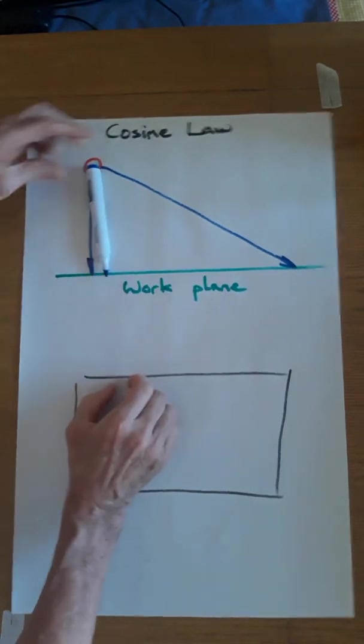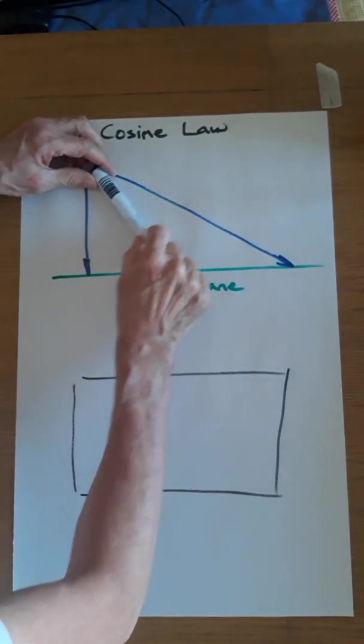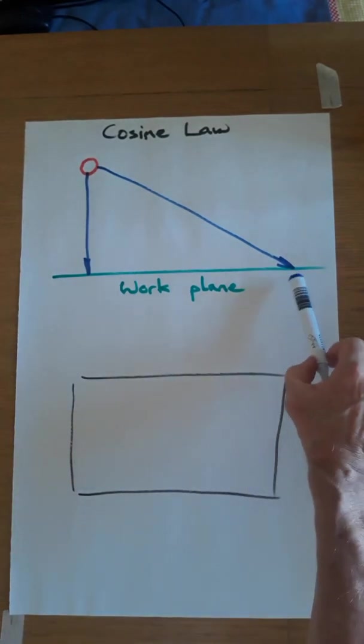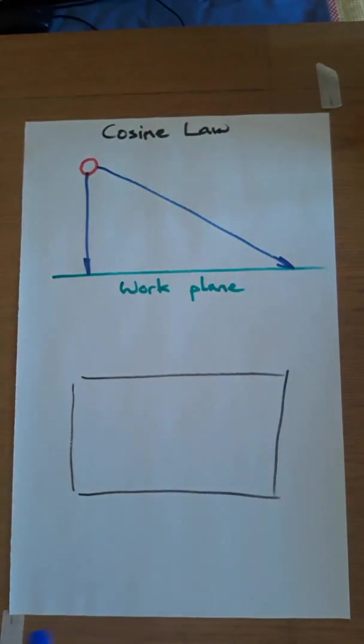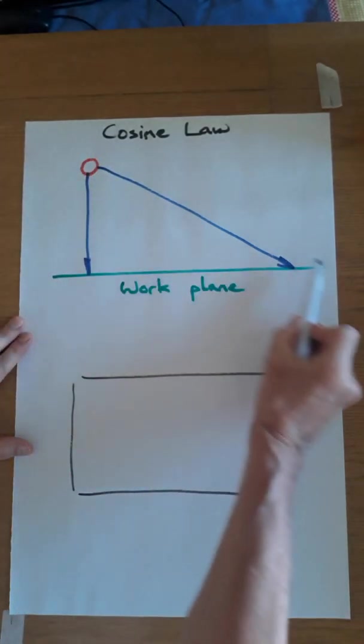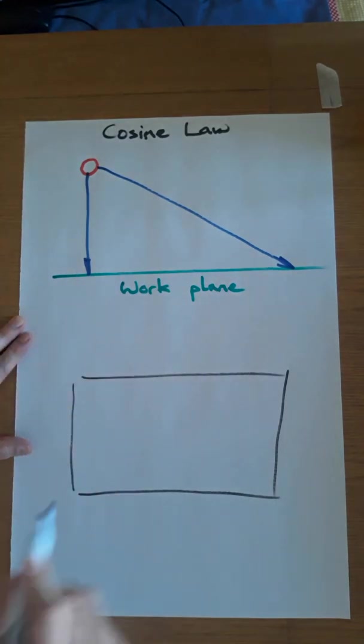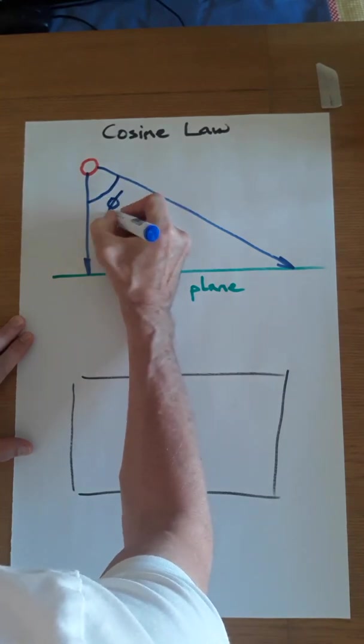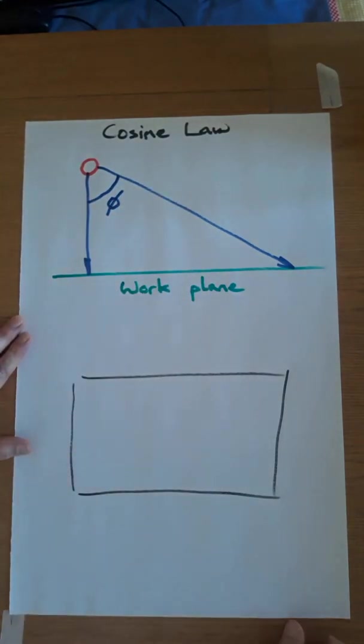So the greater this angle, the greater that angle there is, the lower the amount of light that will be falling on the work plane. So if you just look carefully at this for a moment, we've created a triangle. And that triangle is crucial. We'll do the calculations on it in a moment. But this angle here is called phi.